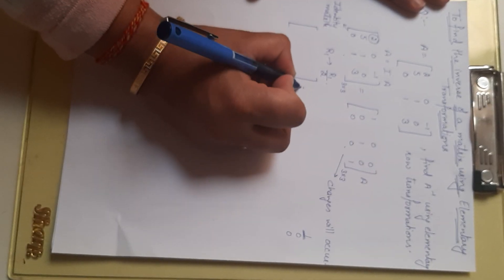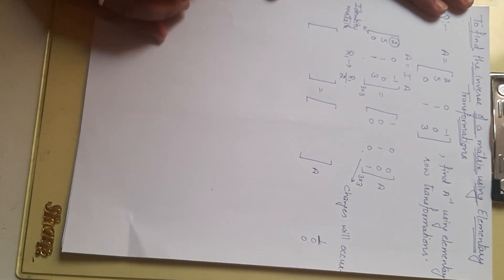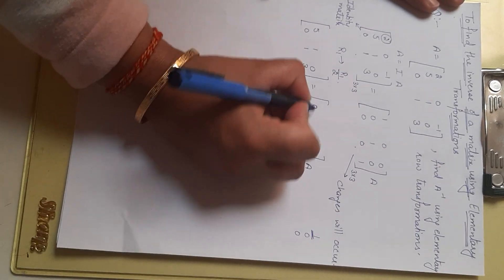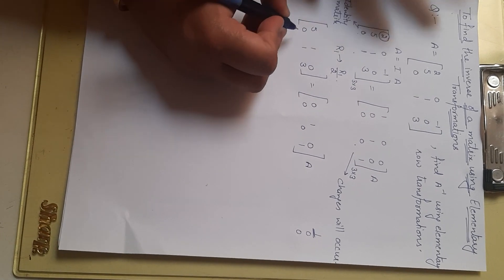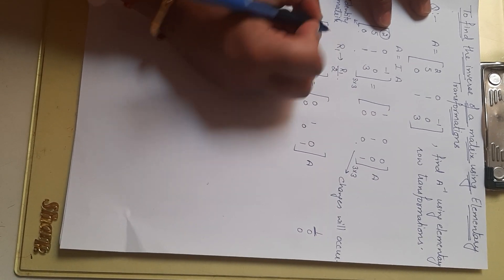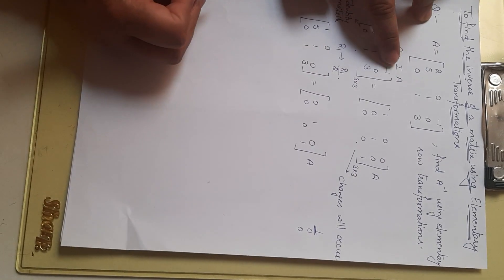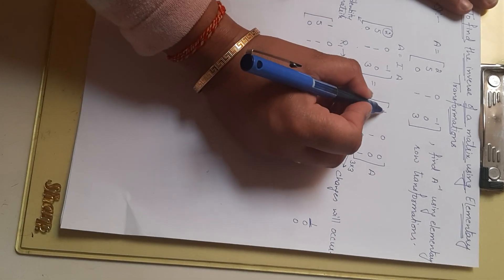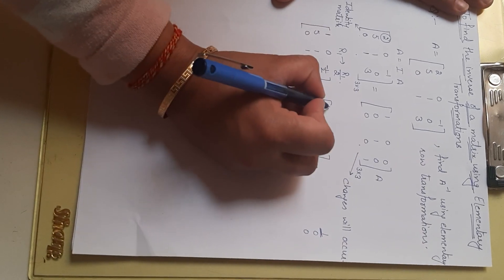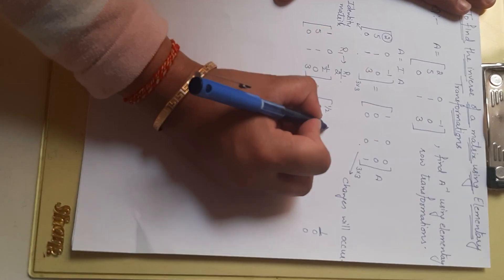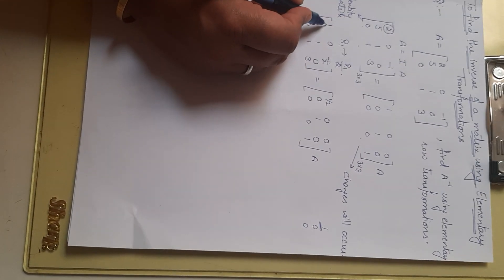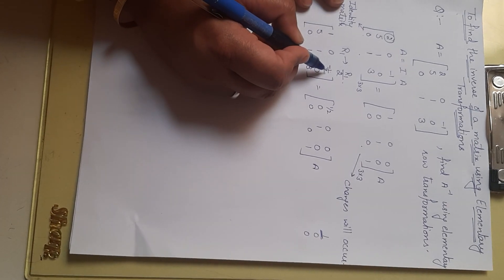When we divide row 1 by 2, rows 2 and 3 remain the same: [5, 1, 0] and [0, 1, 3]. After dividing row 1 by 2: 2÷2=1, 0÷2=0, -1÷2=-1/2. For the identity side: 1÷2=1/2, 0÷2=0, 0÷2=0. So row 1 has changed to [1, 0, -1/2] and [1/2, 0, 0] on the identity side.